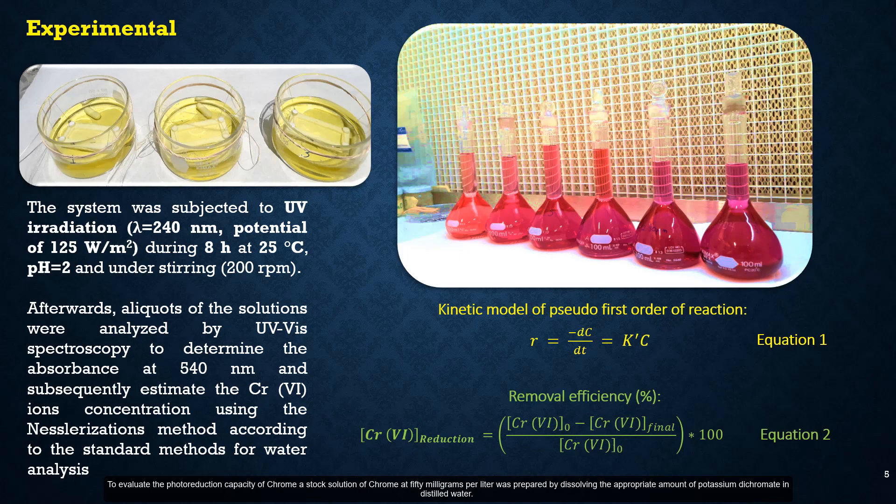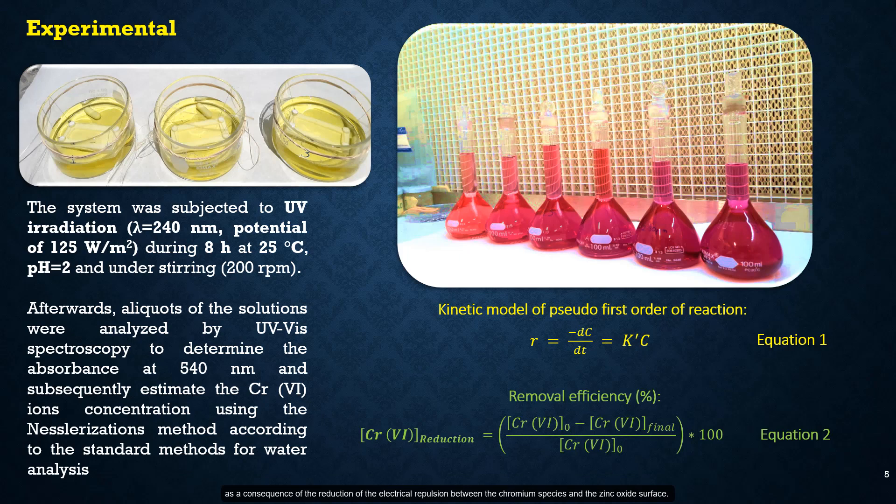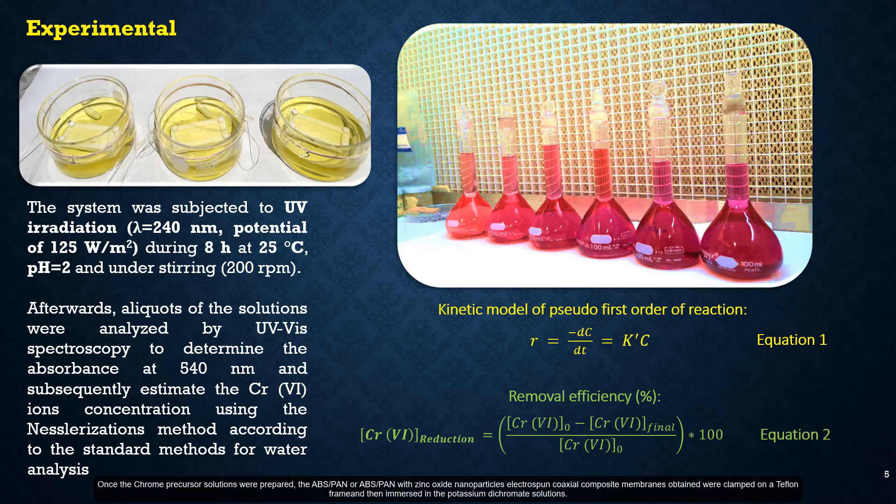To evaluate the photoreduction capacity of chrome, a stock solution of chrome at 50 mg per liter was prepared by dissolving the appropriate amount of potassium dichromate in distilled water. The initial pH was adjusted by adding an aqueous solution of 0.1 molar hydrochloric acid. This pH adjustment was necessary since the absorption capacity of chrome 6 on zinc oxide increases in the acidic environment. Once the chrome precursor solutions were prepared, the ABS polymer or ABS polymer with zinc oxide nanoparticles electrospun coaxial composite membranes obtained were clamped on a Teflon frame and then immersed in the potassium dichromate solution.